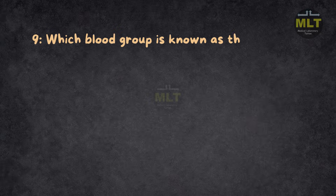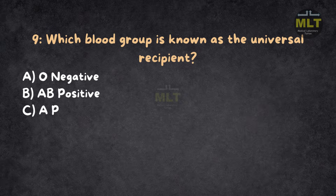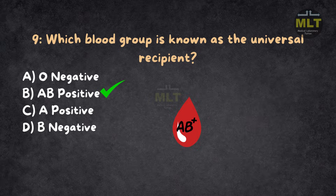Question 9: Which blood group is known as the universal recipient? Option A: O negative. Option B: AB positive. Option C: A positive. Option D: B negative. Correct answer: B, AB positive. AB positive blood group can receive blood from any ABO group due to the presence of both A and B antigens and the RH factor on their red blood cells.